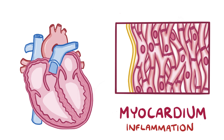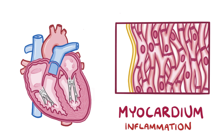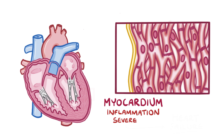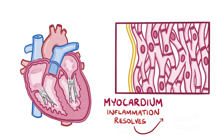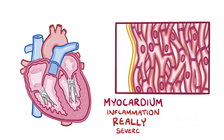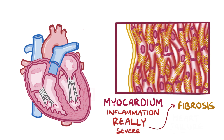That means less blood gets pumped out of the heart with each heartbeat. If myocarditis is severe enough, it can lead to heart failure, when the heart can't keep up with the demands of the body. Once the inflammation resolves, heart contraction typically returns to normal, but occasionally severe inflammation can cause fibrosis or scar tissue in the myocardium, which doesn't contract normally and can cause long-term problems.